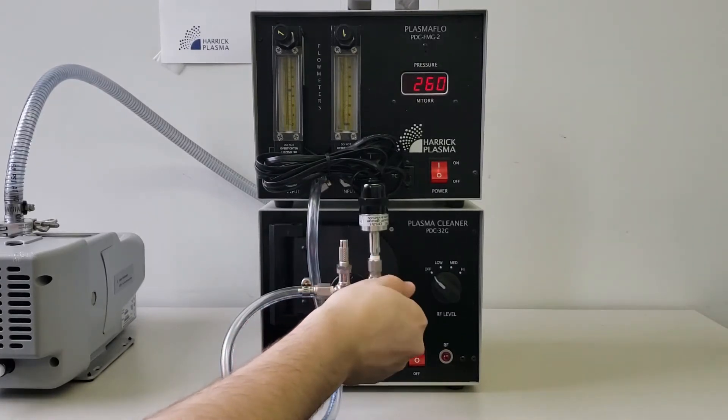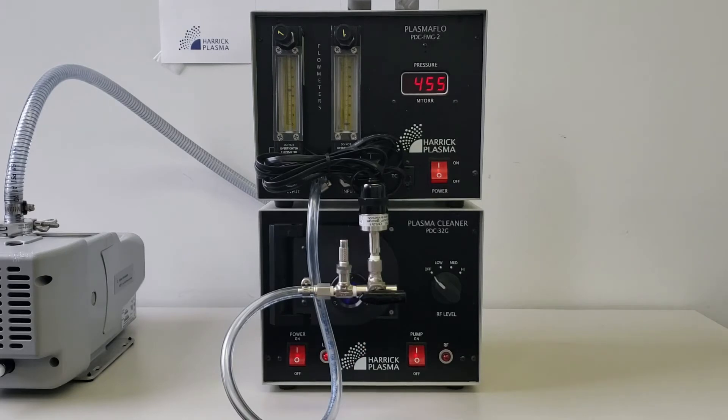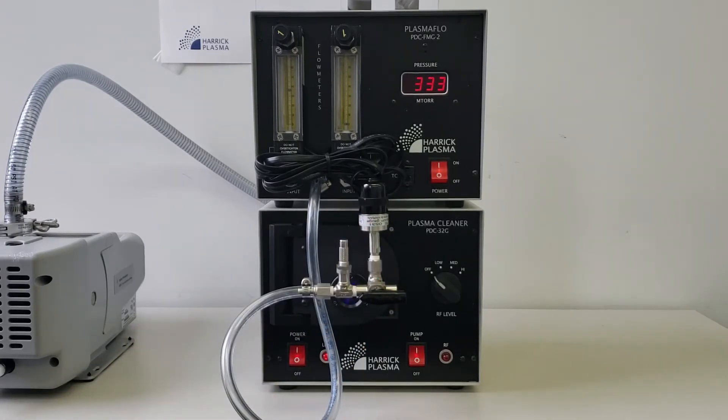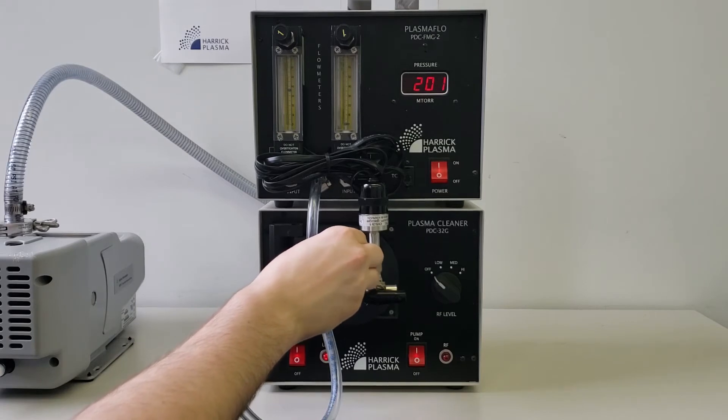Open the three-way valve to the metering valve. The vacuum pressure will rise momentarily as the ambient air between these valves is pulled through the chamber. Slowly open the metering valve about one-quarter of a turn to allow airflow into the chamber.